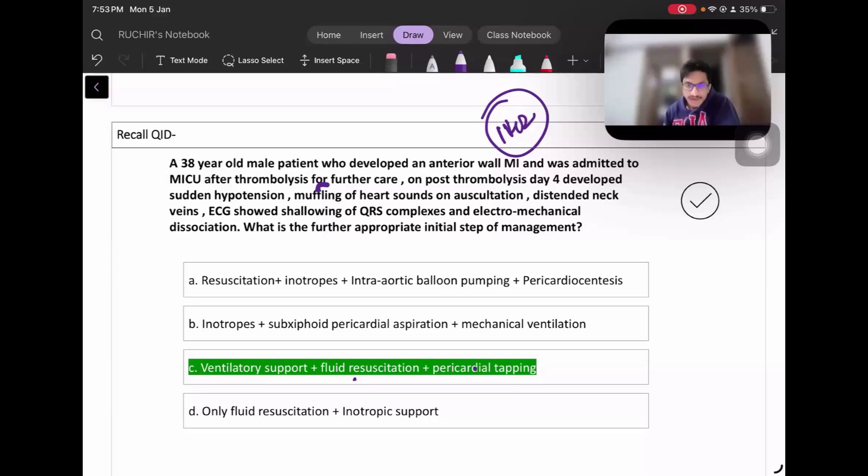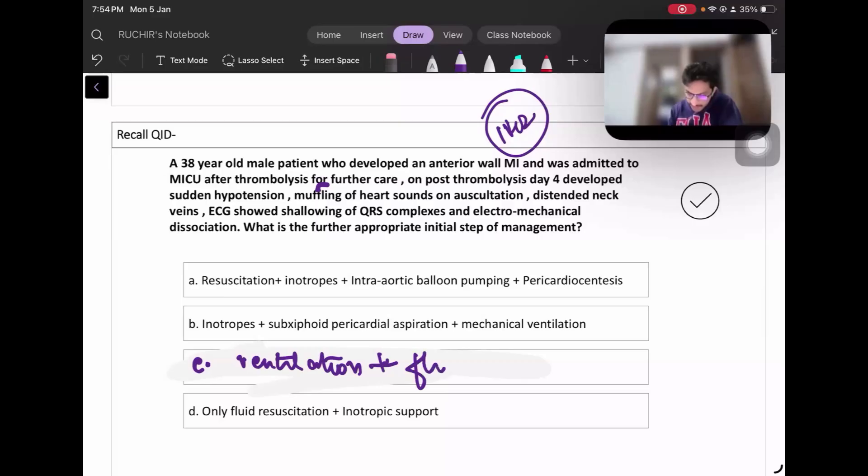If there was no pericardial tapping in that option, then this cannot be the answer. If it was only ventilator support and fluid resuscitation, that cannot be okay. Pericardial synthesis was only given with the IABP option? So this option had ventilation plus fluids? Okay, then this cannot be the answer.